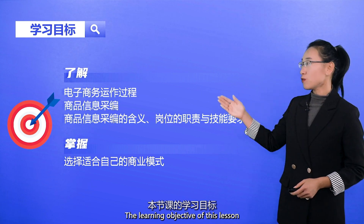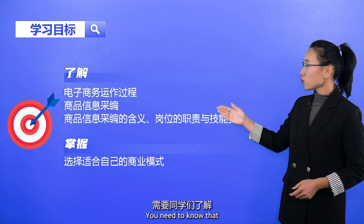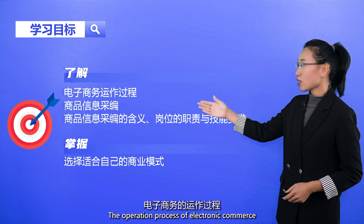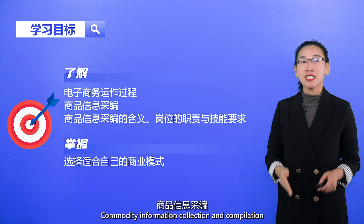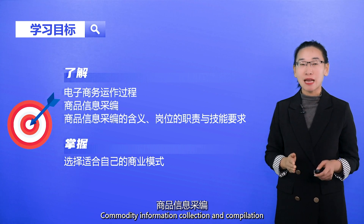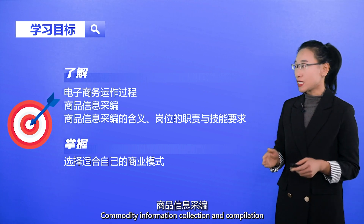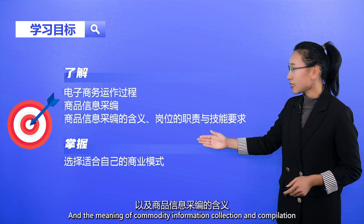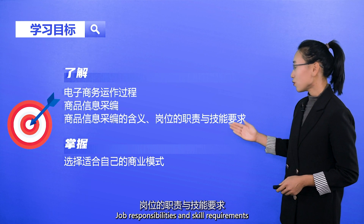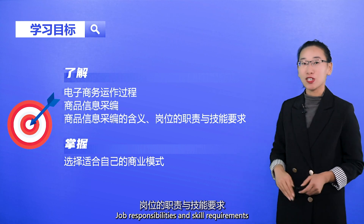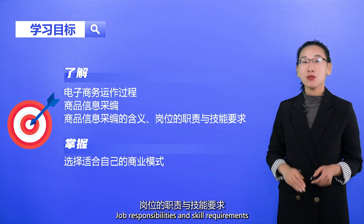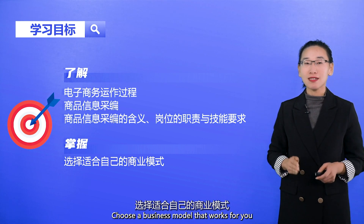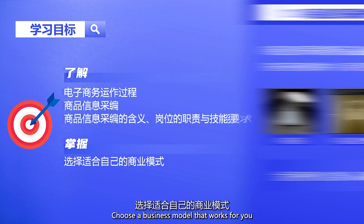The learning objective of this lesson: you need to know the operation process of electronic commerce, commodity information collection and compilation, and the meaning of commodity information collection and compilation, job responsibilities and skill requirements. Students also need to master how to choose a business model that works for them.